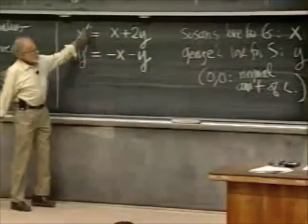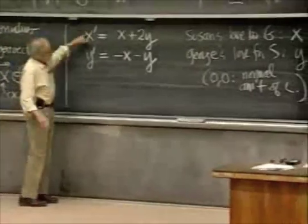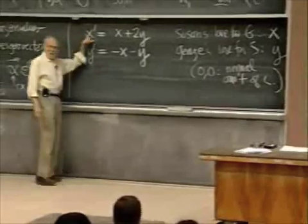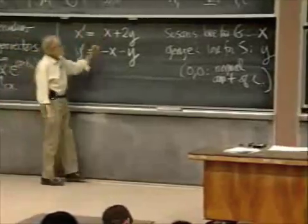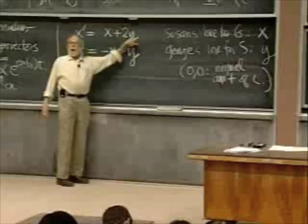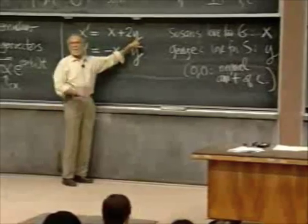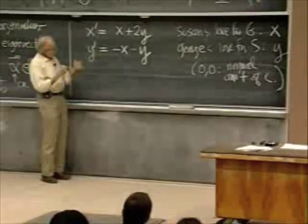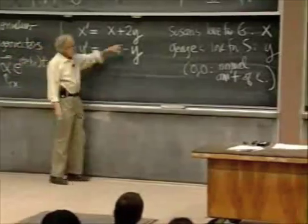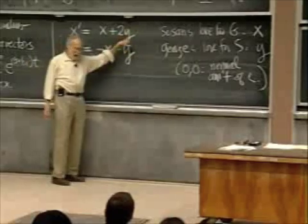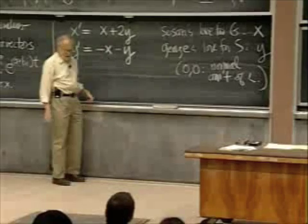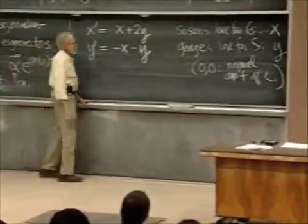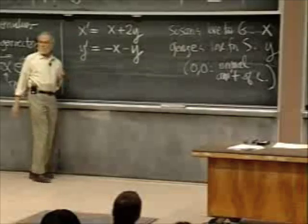In what sense does this model it? Well, this is a normal equation, and this is a neurotic equation. That's why this is George, who seems very normal to me — Susan's a normal person. When y is positive, that means George seems to be loving her more today than yesterday, and her natural response is to be more in love with him. If y is negative, she gets a little mad at him, and x prime is negative.